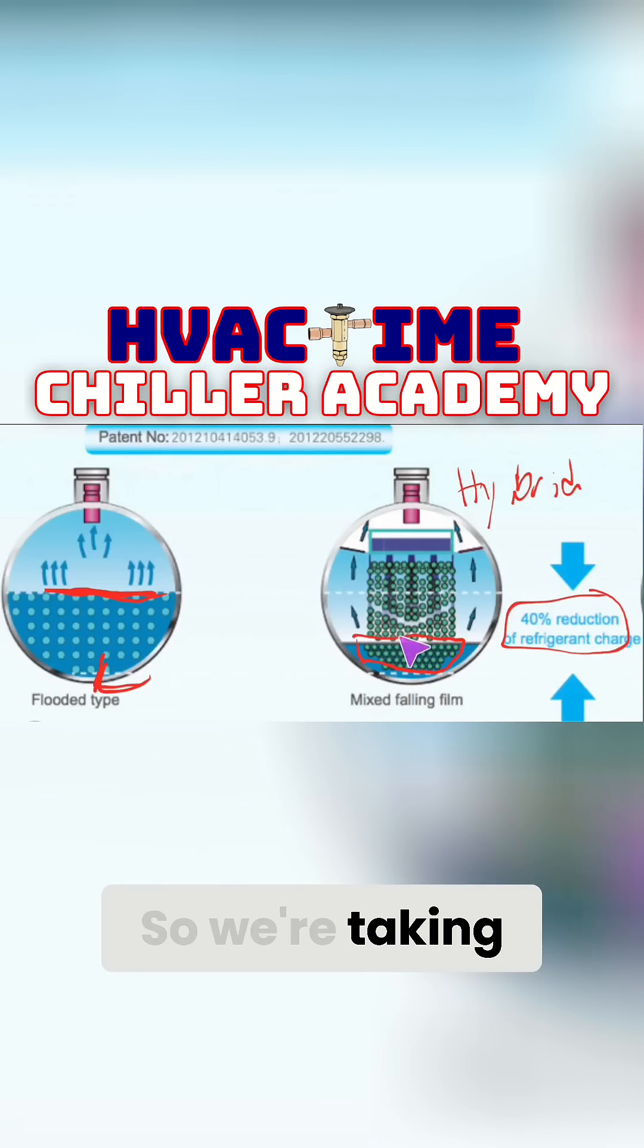The goal is you have all of the liquid refrigerant submerged, all the piping. Well, in this particular case we're reducing the charge required and we're getting a lot less refrigerant needed.